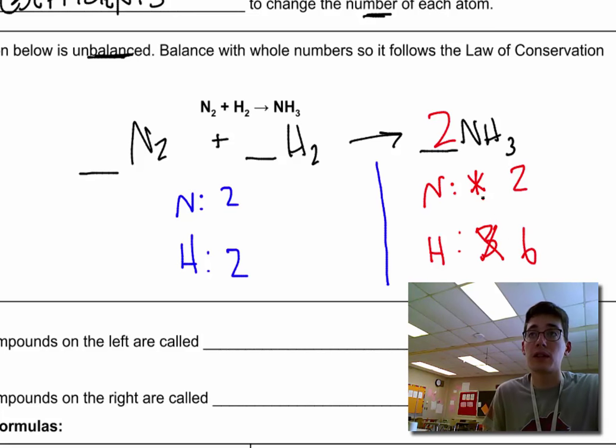Now compare back to the left side. In my reactants, I have two nitrogens. That's good. Check mark. My hydrogen, I've got two on the reactants and six in the products. I cannot change this to an H6. That's not allowed. But what I can do is I can say, I want three H2 molecules, giving me a total of six hydrogen atoms in my reaction. And now we have a balanced chemical equation.